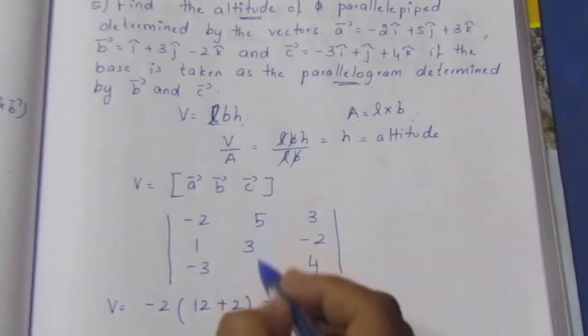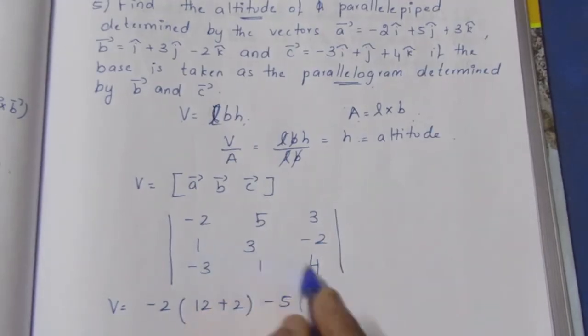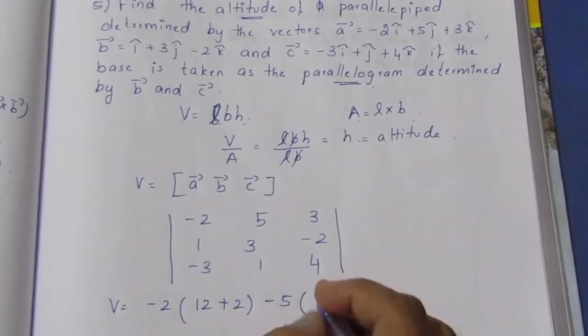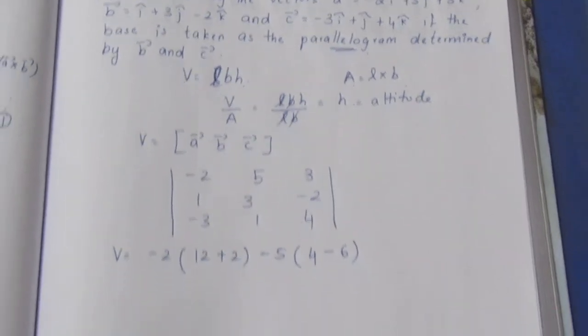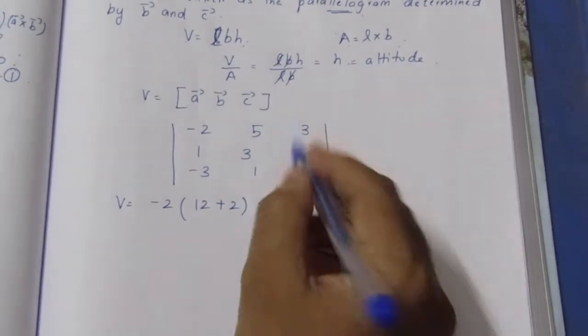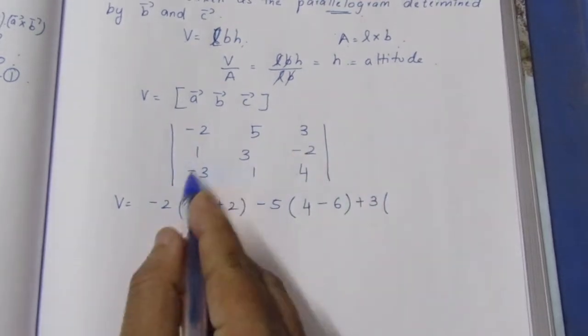For the first row expansion, we multiply the first element by its 2×2 minor, then subtract the second element times its minor.